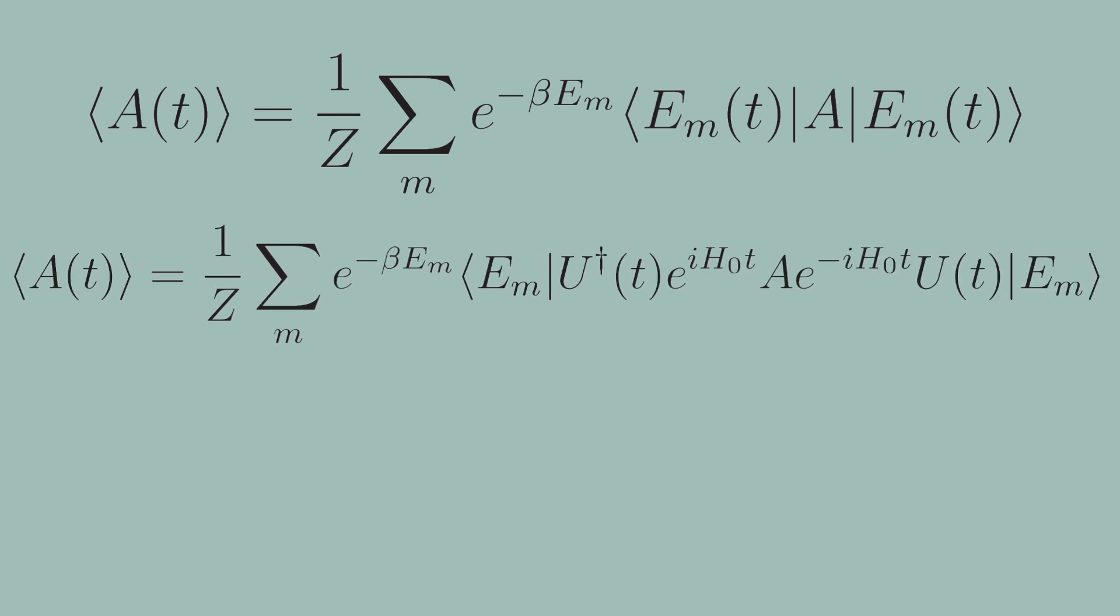Doing so gives you the following expression. So notice right away that the center of this equation, we have the equation of the time evolution of our observable a in the Heisenberg picture under the evolution of the initial Hamiltonian h0.